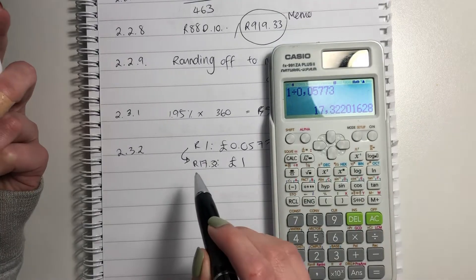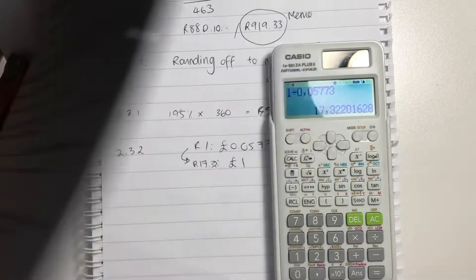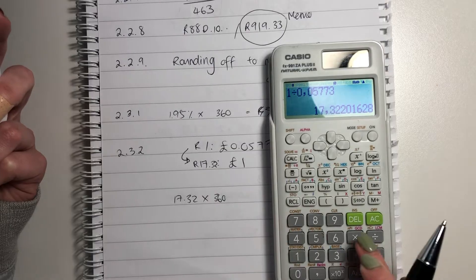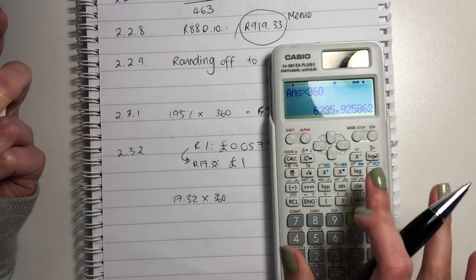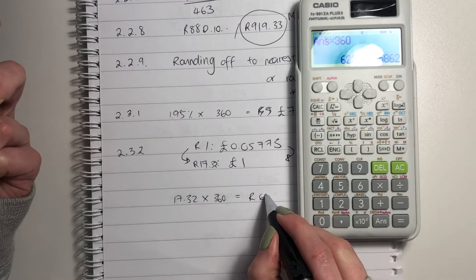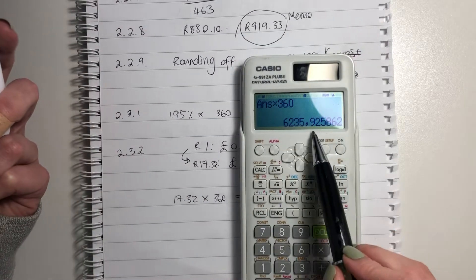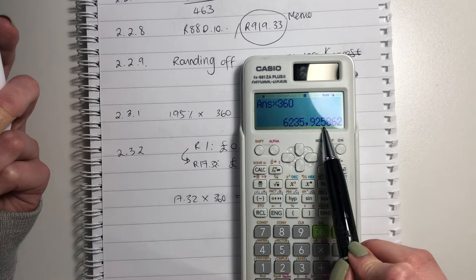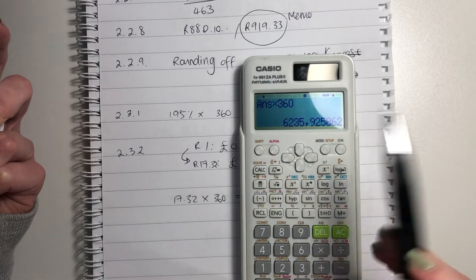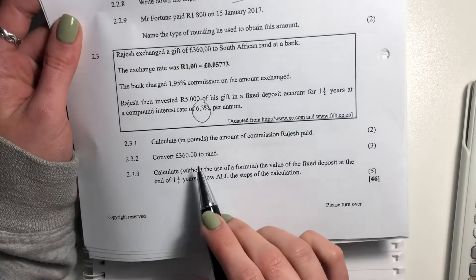1 divided by 0.05773, so it is 17 rand and 32 cents. Don't round it off. You can round it off when you write it here, but don't round it off in your calculator. How many pounds was it? It was 360. So we're going to say 17.32 times that by 360. As I said, don't round it off before, only round it off at the end. So in rands, it was 6,235. And now round it off at the end. That 5, if you're going to round it to two decimal places, you always look at the third decimal place, and then you're going to round it up. So because 5 is greater, well, 5 and above, you round up. So it becomes 9.3.